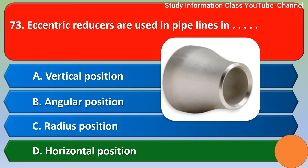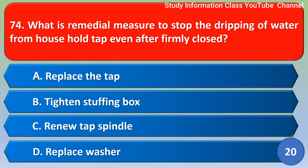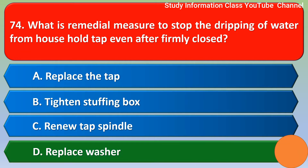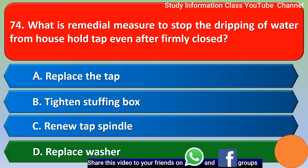Next question: What is the remedial measure to stop the dripping of water from a household tap even after being firmly closed? Option A: replace the tap, Option B: tighten the stuffing box, Option C: fit a new tap spindle, Option D: replace washer. The correct answer is Option D, replace washer.